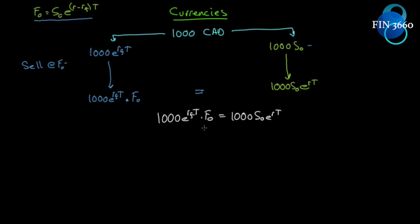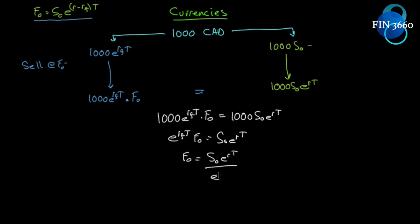First thing we can do — divide through by 1000 to get rid of that. We'll be left with: e^(RF×T) × F₀ = S₀ × e^(R×T). We can divide through now by e^(RF×T), which will leave F₀ = S₀ × e^(R×T) divided by e^(RF×T).